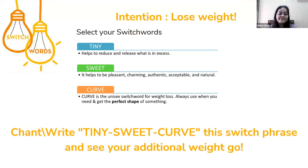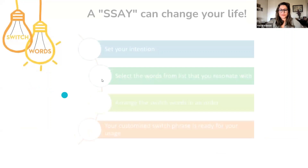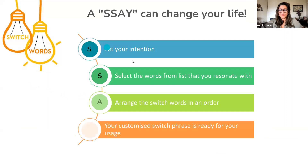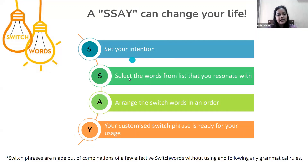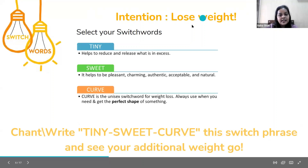I'll quickly teach you how we did this. If you go back to the previous slide, we learned how to do the intention and how we can form a switch phrase and chant. We said: do intention setting, then select the words, arrange the words, and the switch phrase is ready. So that's what we did here — we identified the intention, which is to lose weight.